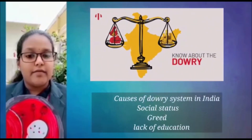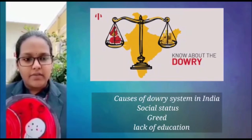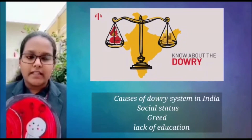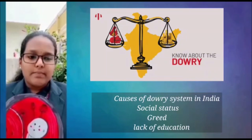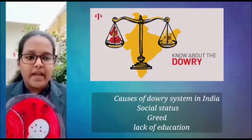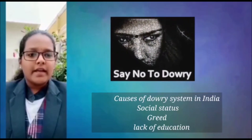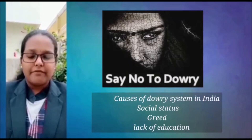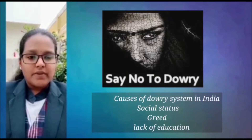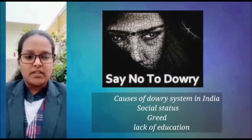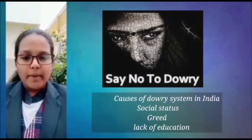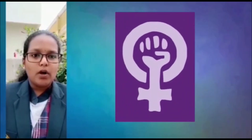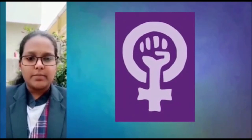A boy is widely viewed as an asset — a future breadwinner and a caregiver who will look after his parents when they become old. A girl, on the other hand, is seen as a liability, as parents are often pressured to pay dowries when they get married. It has been revealed that preference of son over daughter is a major reason for female infanticide in many countries. The dowry system in India makes a daughter an unaffordable economic burden, contributing to female infanticide.